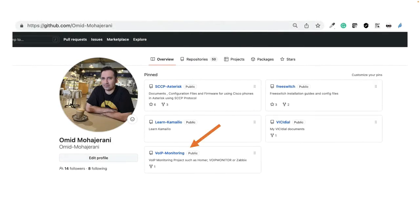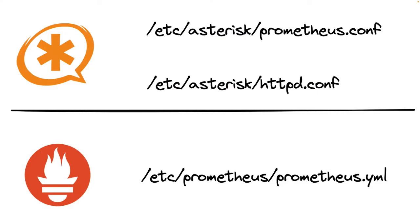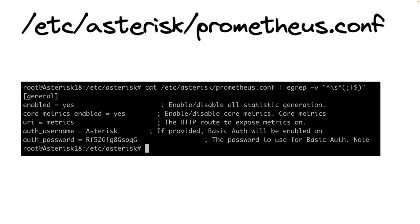All the configuration files and commands used in this video are documented in my GitHub account — the link is in the description. To configure Asterisk to expose its metrics, we need to configure two files: /etc/asterisk/prometheus.conf and /etc/asterisk/http.conf. We also need to configure /etc/prometheus/prometheus.yml on our Prometheus server to tell it where to scrape. Let's get into the configurations — they are very straightforward.